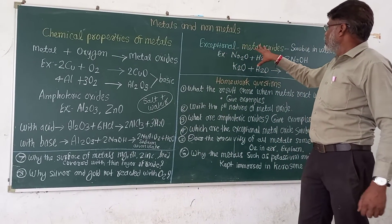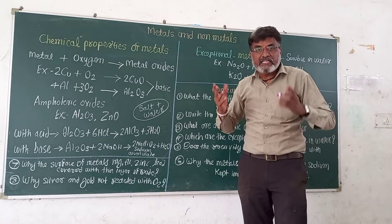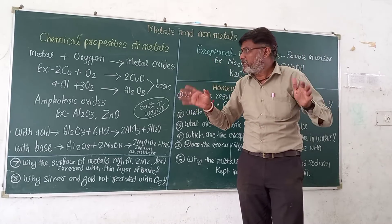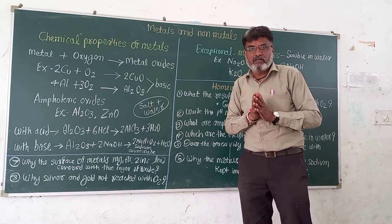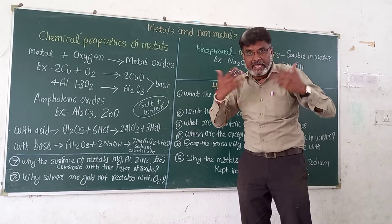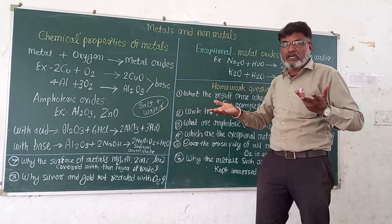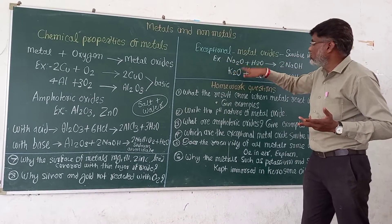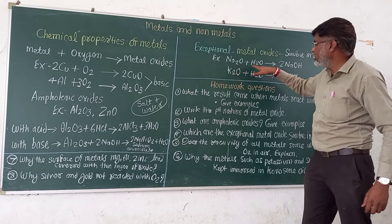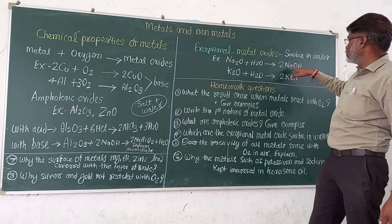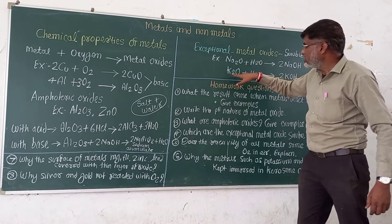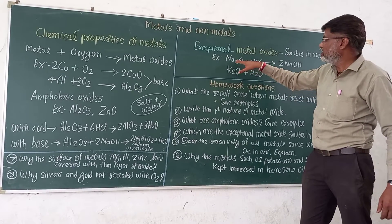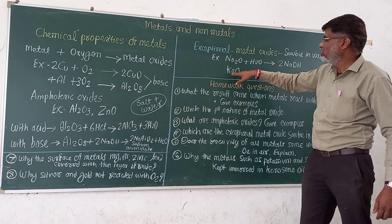Now, regarding metal oxides — whether they are soluble or insoluble in water: maximum metal oxides are insoluble in water. The exception is sodium oxide and potassium oxide, which are soluble in water. When sodium oxide reacts with water, it forms sodium hydroxide; similarly, potassium oxide forms potassium hydroxide. These are the soluble metal oxides.